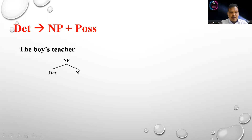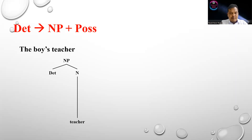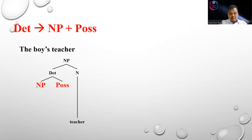So we have determiner plus noun, and then we draw the branch for the constituent of the noun, which is 'teacher.' Teacher serves as the core of this NP. Then we divide the determiner, which is composed of NP-POS.